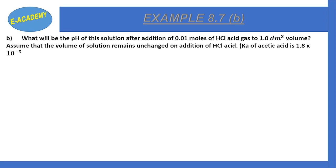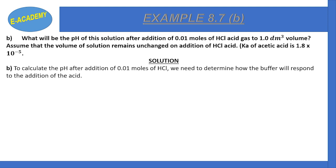Example 8.7 Part B: What will be the pH of the solution after addition of 0.01 moles of HCl to 1.0 dm³ volume? Assume volume remains unchanged. Ka of acetic acid is 1.8 × 10⁻⁵. We need to determine how the buffer will respond to the addition of the acid.